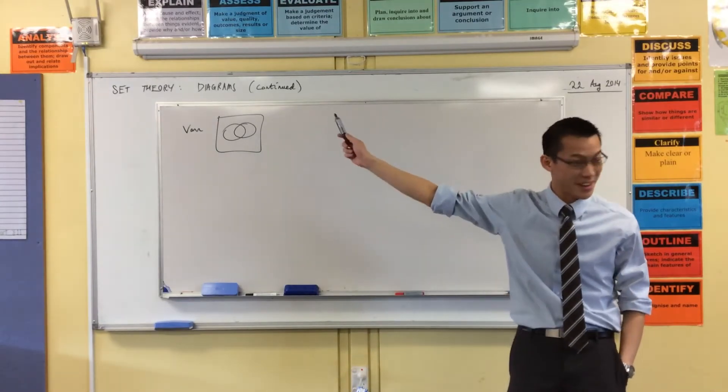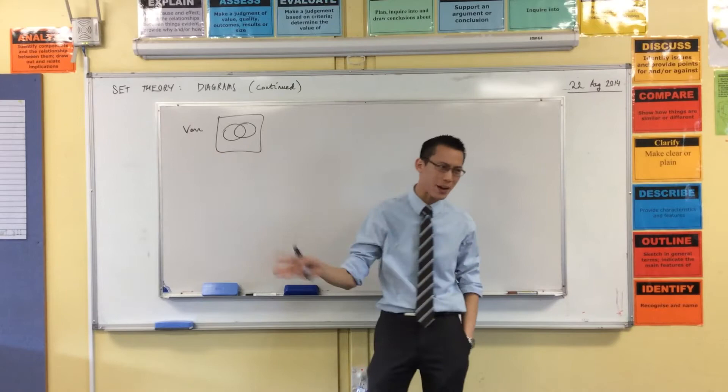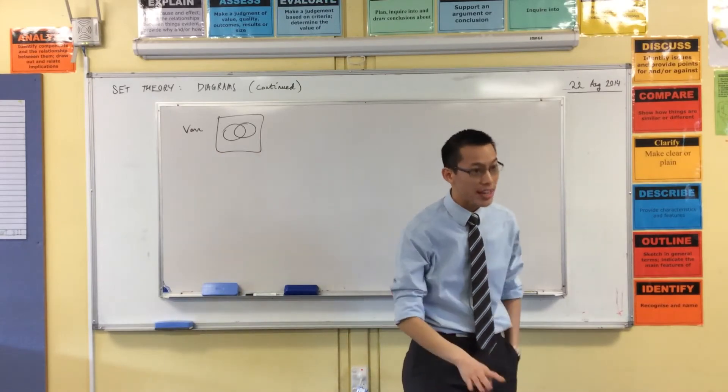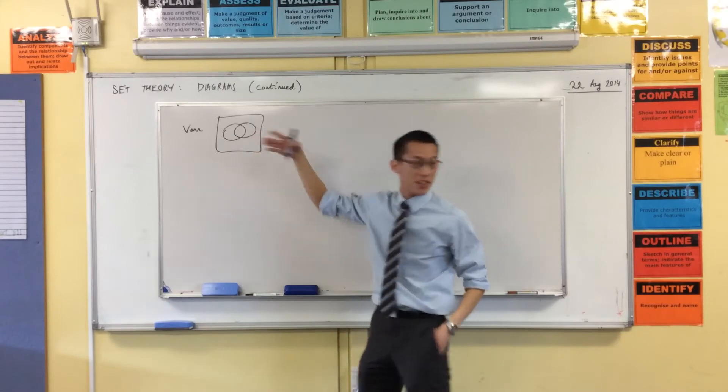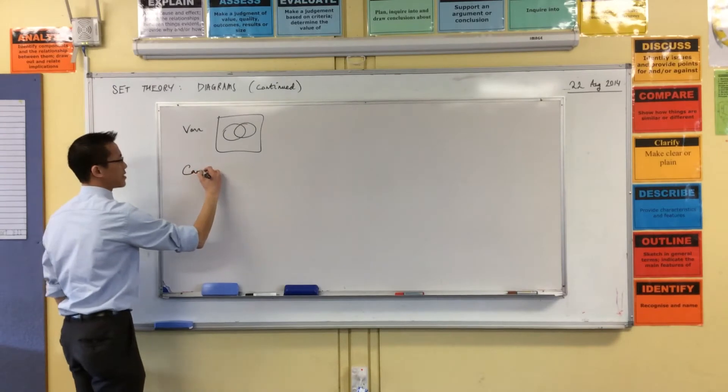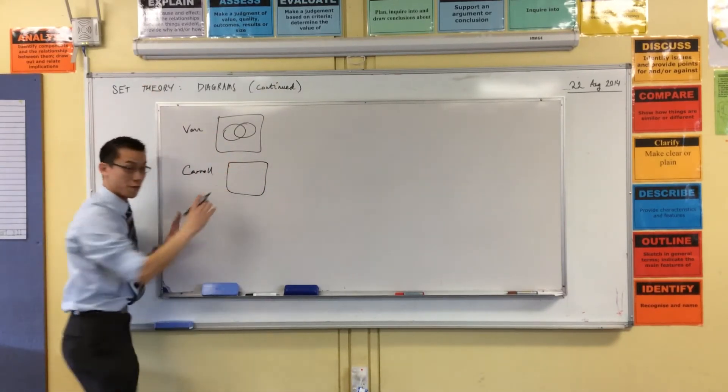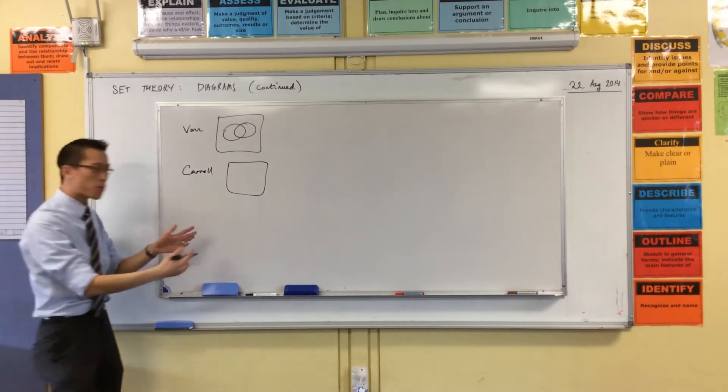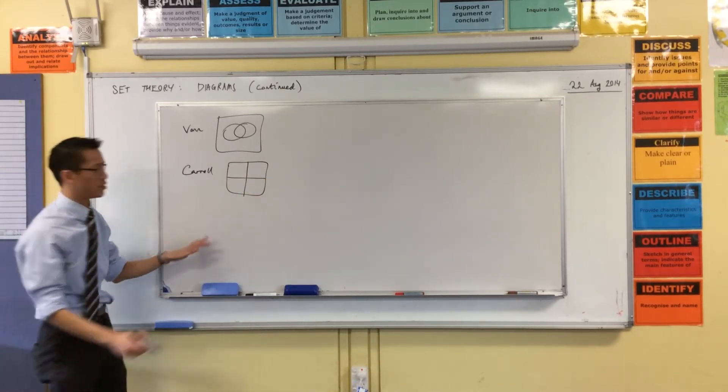After we looked at Venn diagrams, we then looked at saying, well, you know, you don't have to arrange it like this. All you need is to have four separate regions that can represent the same thing, right? So what was the other kind of diagram? It starts the same way with this outer sort of rectangle, which represents everything. But then we broke it up like this.